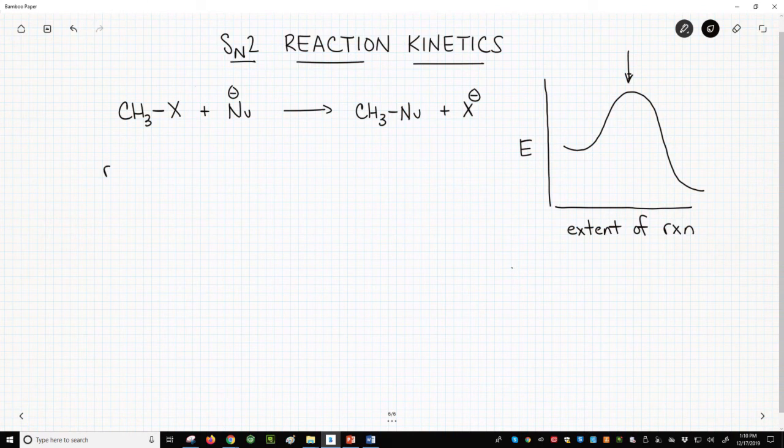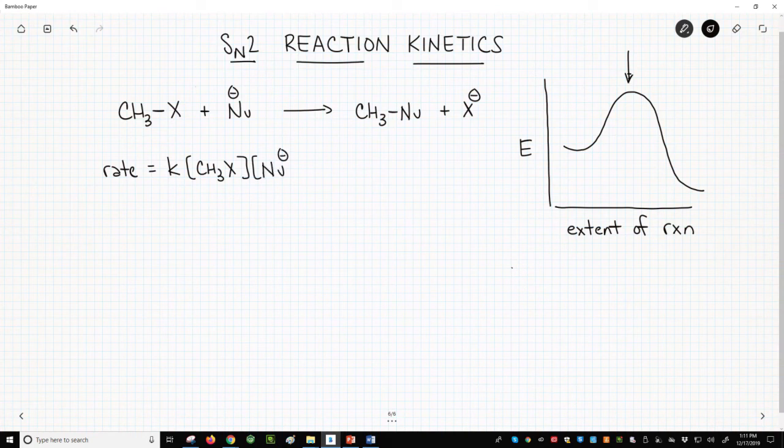Here is the rate equation for the SN2 reaction. The rate equals the rate constant times the concentration of the alkyl halide times the concentration of the nucleophile. The reaction has an overall order of 2, and it is first order with regard to the nucleophile. We haven't written in the exponent, but we can. That's a 1, and it's also first order with regard to the alkyl halide.